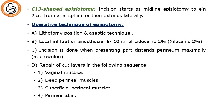The J-shaped episiotomy: the incision starts at the midline, within two centimeters from the anal sphincter, then extends laterally.